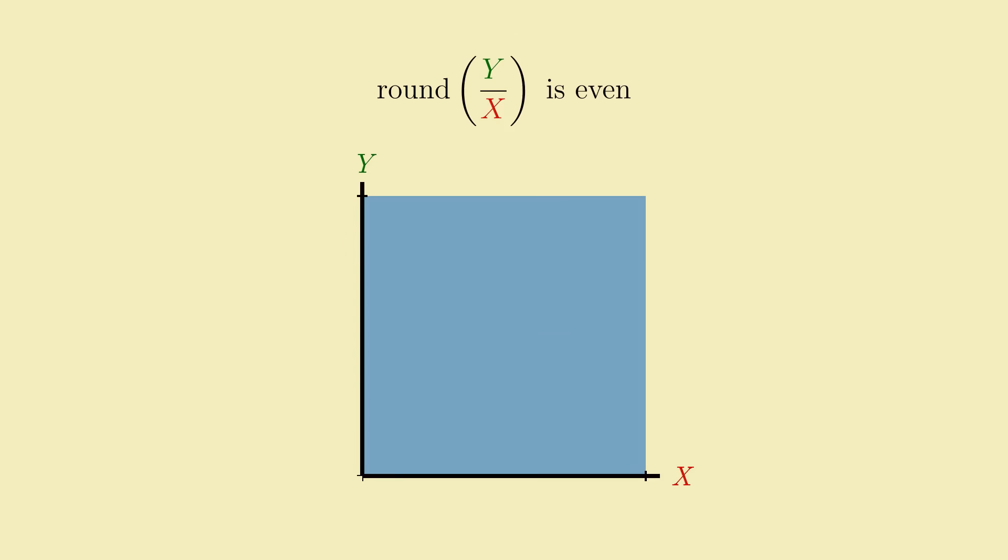To start, it'll probably be easier to think about it if instead of asking when y over x rounds to any even number, we ask when it rounds to a particular even number. Like, say, 0. What region of the unit square consists of points whose coordinates round to 0 when you divide them y over x?